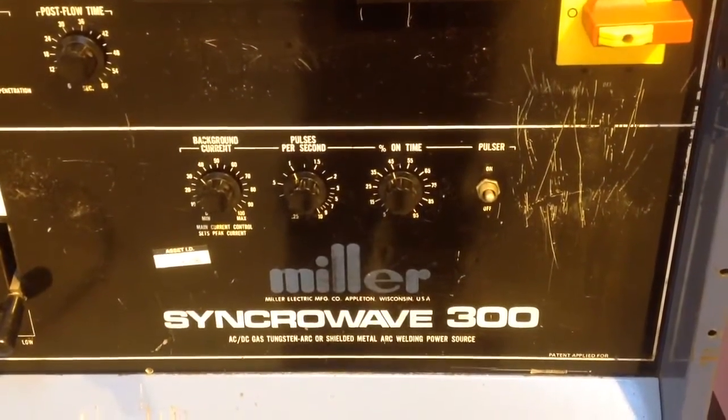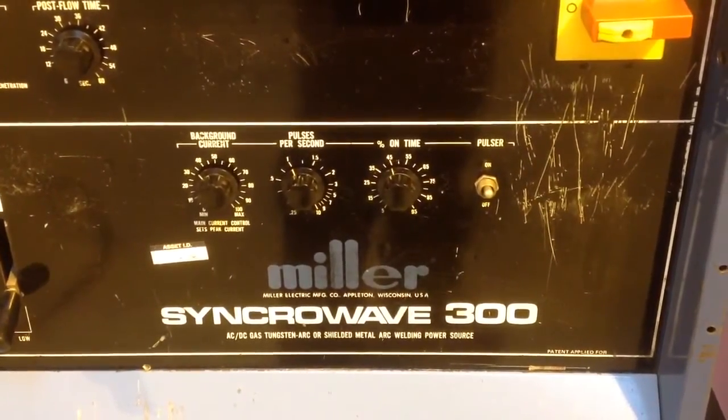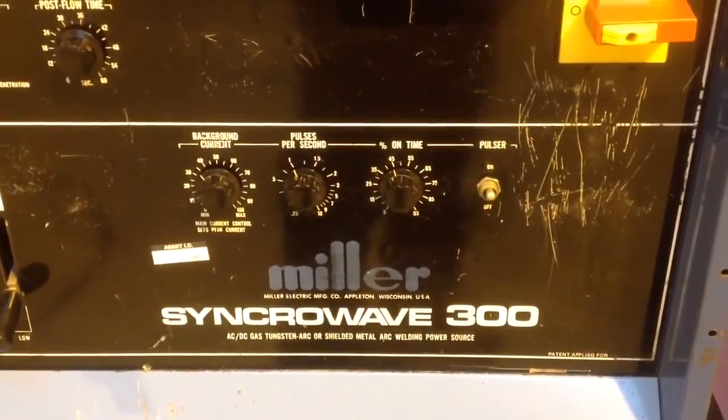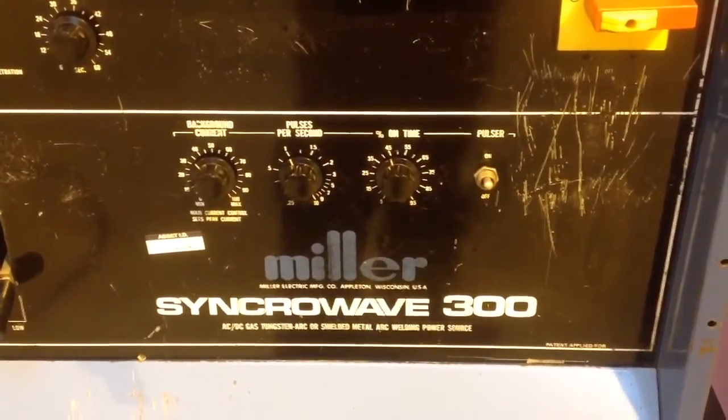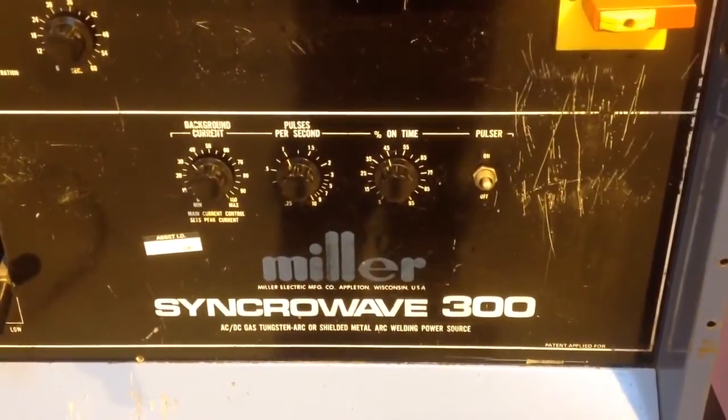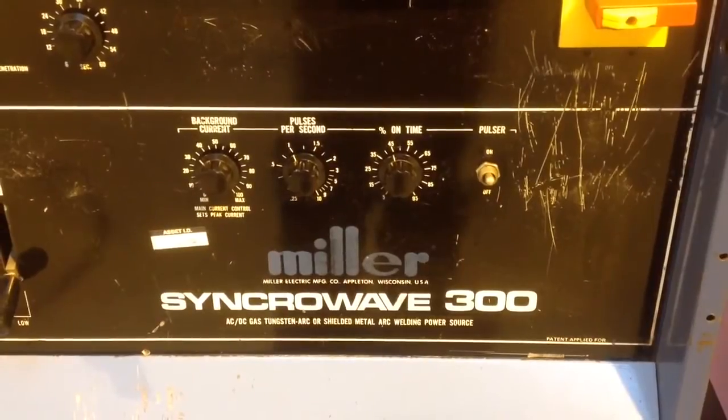Using about one pulse per second. 33% background current and about 45% on time. This is the on time for the background current, not the peak. So some machines are different. Some machines work arse about face.